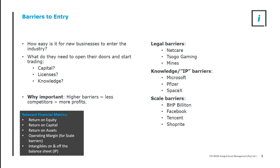Gaming has casinos — each casino needs a casino license. If you don't have one, you don't have a casino. People don't think about mines as having legal barriers to entry, but they do — it's called mineral rights. If you own the mineral rights to something in the ground and someone else mines your mineral rights, they've technically stolen from you. So it is a legal barrier to entry. People can compete against those without those licenses, but technically those are criminal organizations.